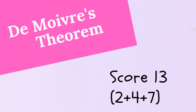The second chapter is De Moivre's Theorem. There is only 1 exercise with some problems. You will need to read from your faculty material. There is 1 SAQ, 1 VSAQ, and 1 Long Answer Question, giving a total of 13 marks.